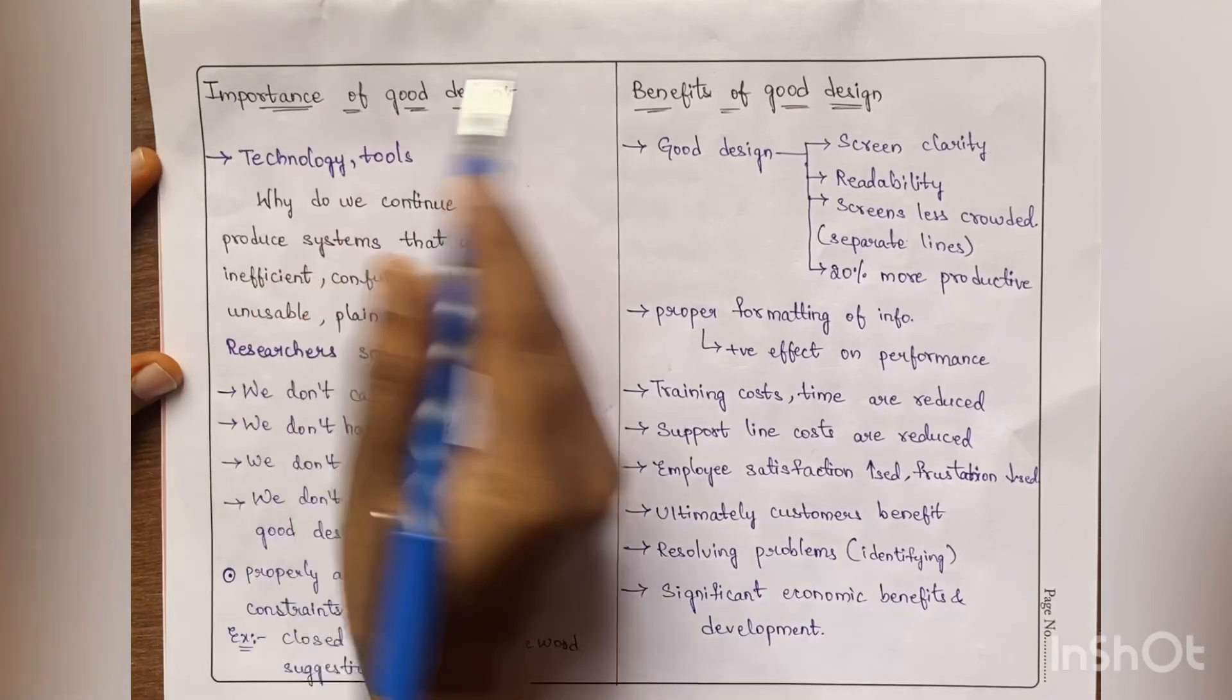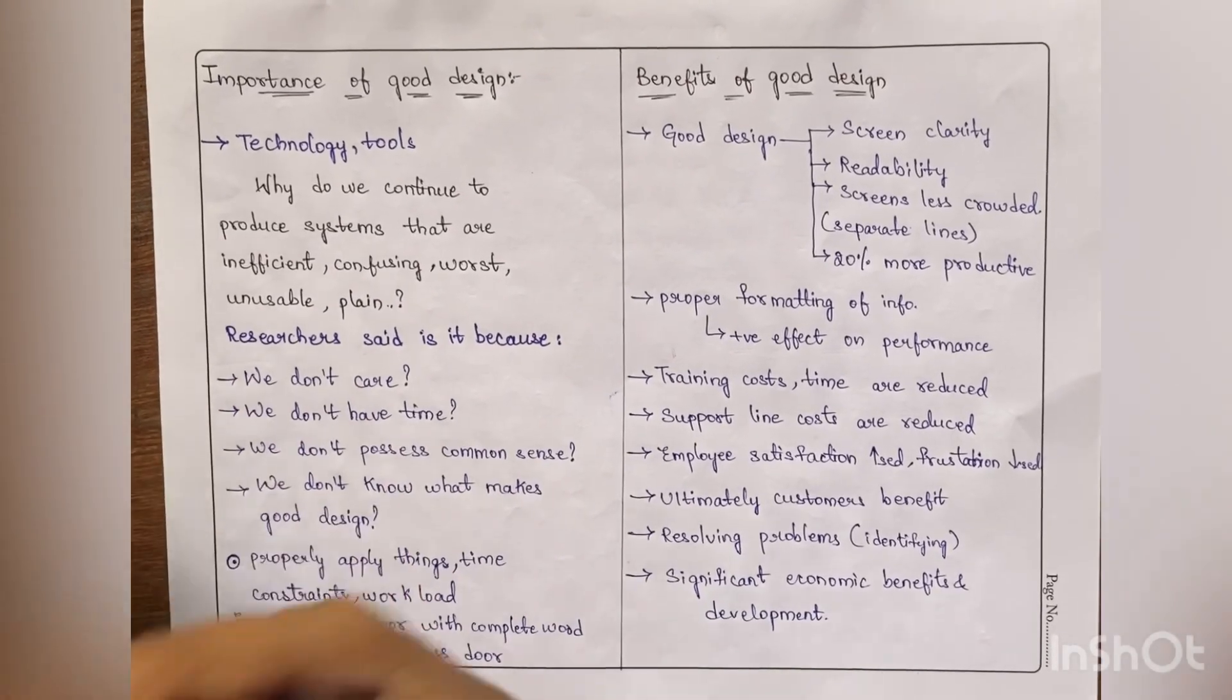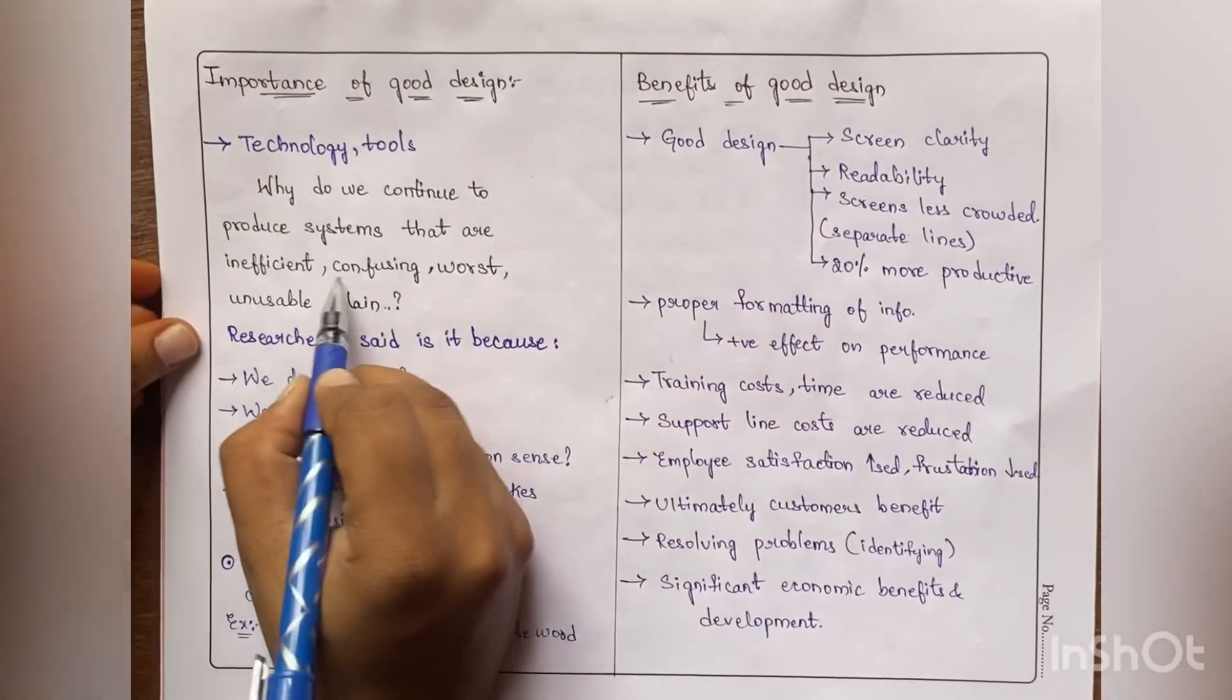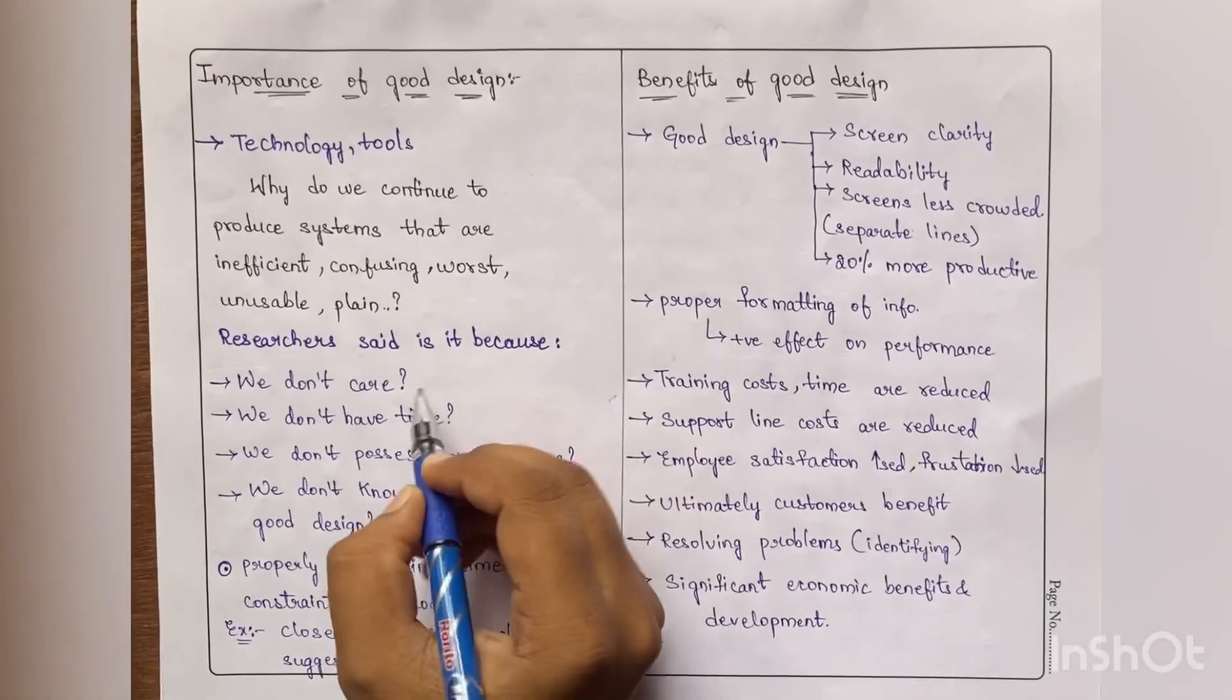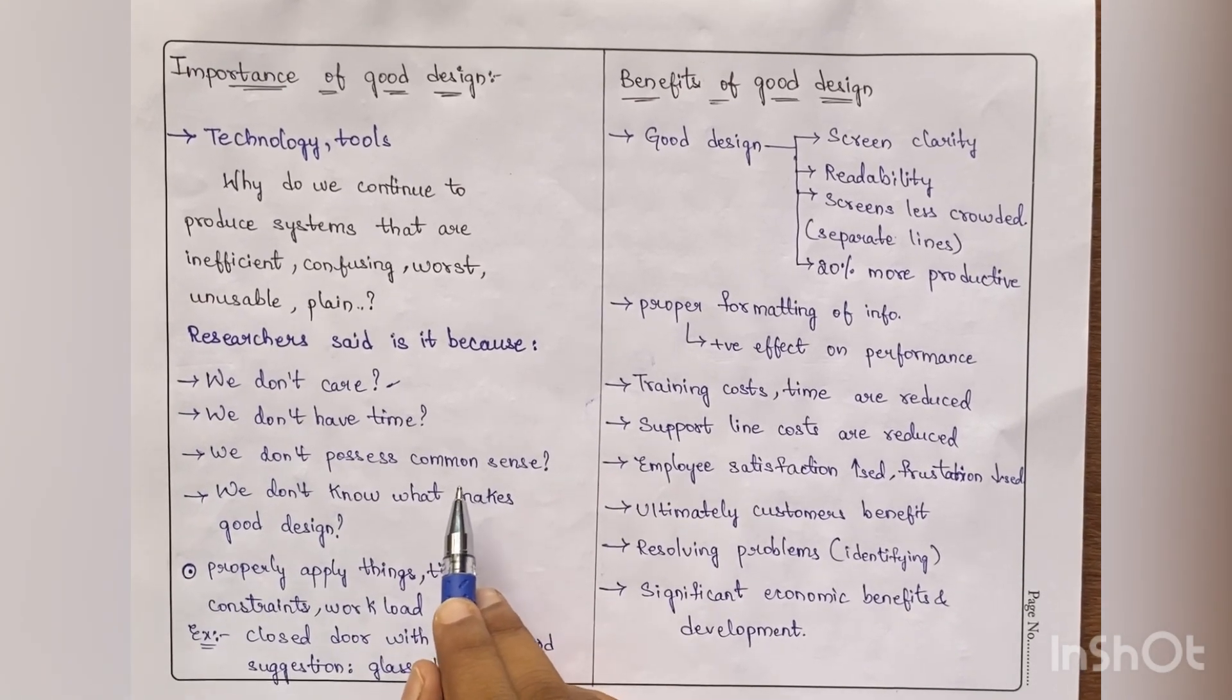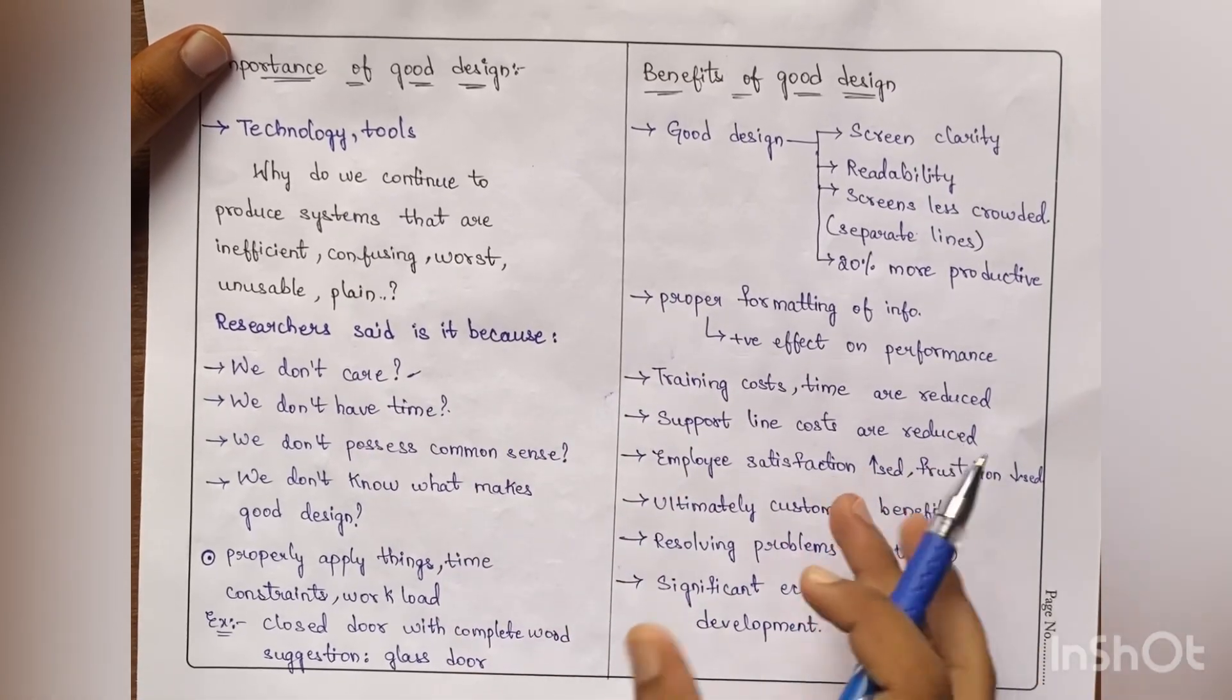Now coming to the next topic, the importance of good design. Why good design is actually necessary for us. Many researchers are doing research on this. As we have increased technology, tools are getting increased, we are getting variety of tools. But why still we are producing inefficient system interfaces. Why they are still confusing, why they are unusable for us. Researchers are questioning: Is it because we don't care about the things, we don't have time, or we don't possess any common sense, or we don't know what makes a design good.